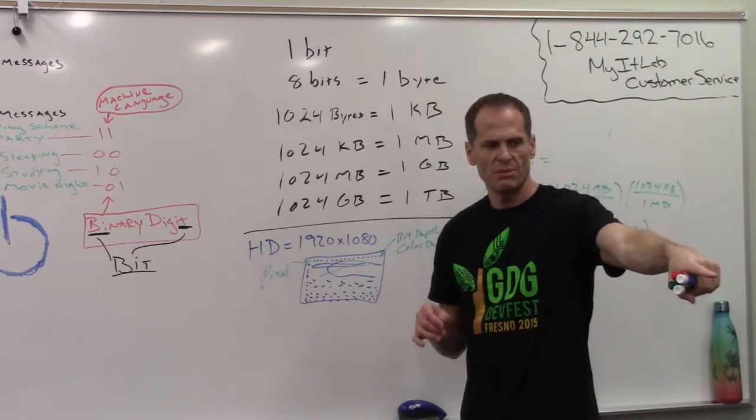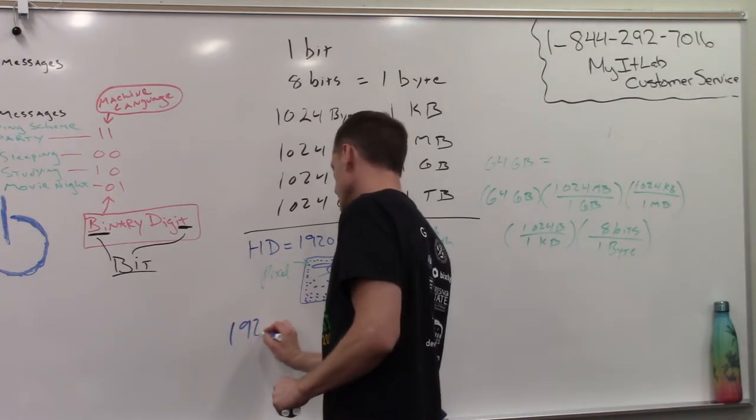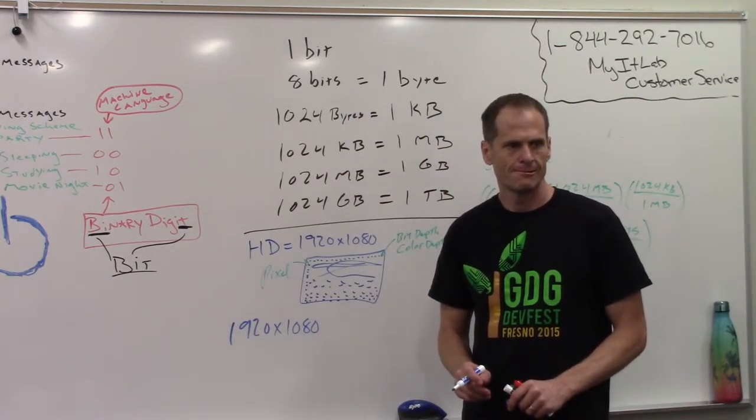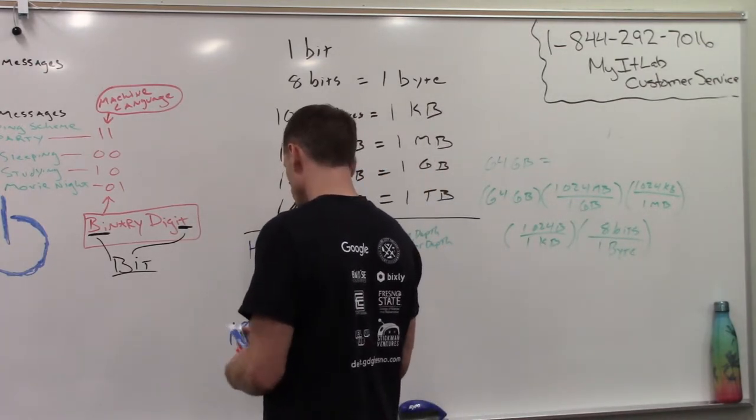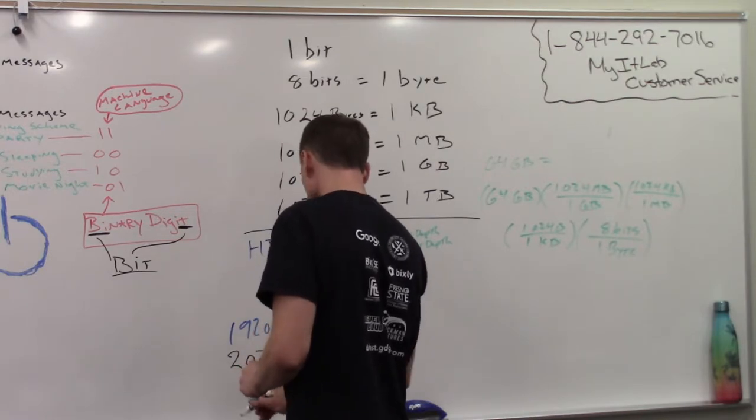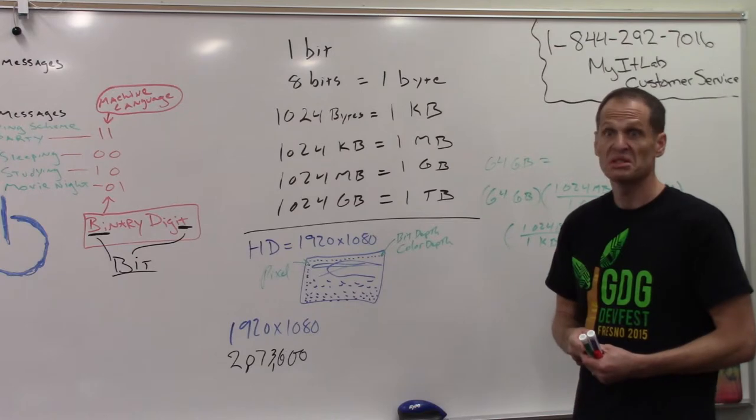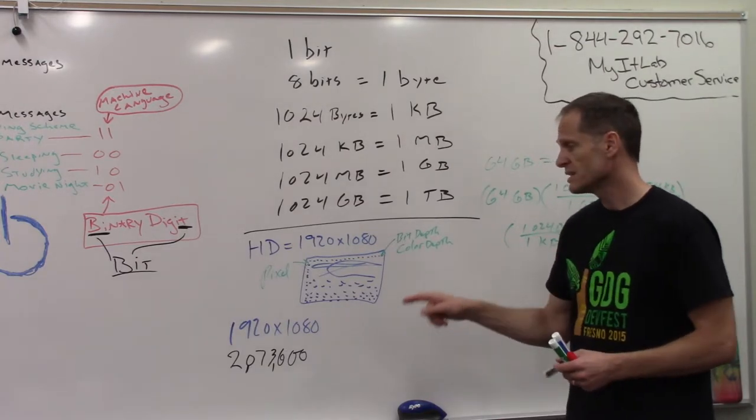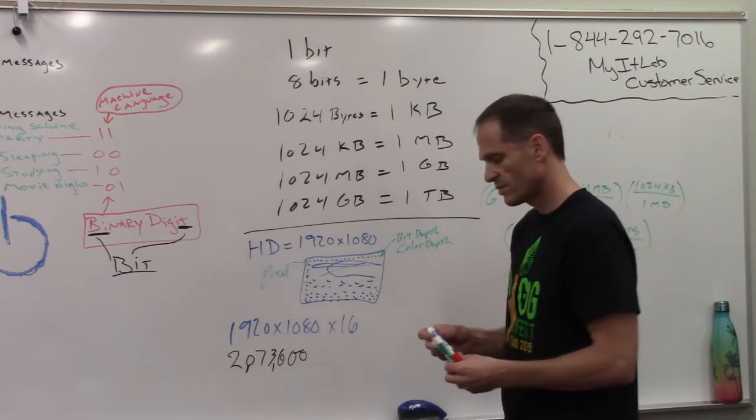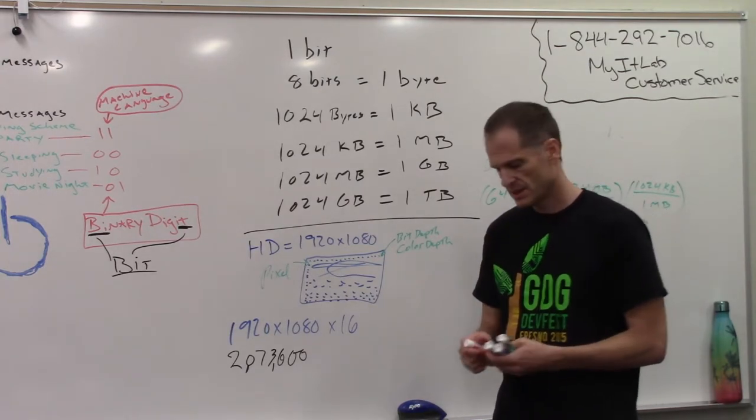So what's 1920 by 1080? 2,073,600. We're going to go for a bit depth of 16, which means for each pixel, it could be one of about 65,000 possible colors. It's 33,177,600.